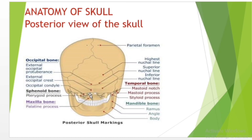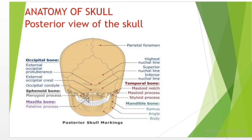The pterygoid process extends downward from each side of the sphenoid bone near the union of its body and the greater wing. It consists of the medial and lateral pterygoid plates, which are fused above anteriorly and separated below by the pterygoid fissure, whose edge articulates with the process of the palatine bone. The palatine process of the maxilla is a thick horizontal process of the maxilla forming the anterior three-quarters of the hard palate, with the horizontal plate of the palatine bone making up the rest.